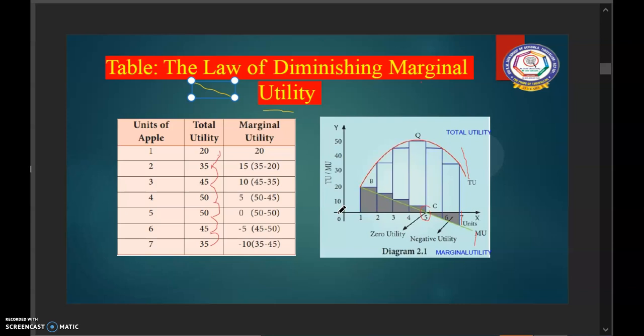So, this means that the more we have of a thing, the less is the satisfaction or utility that we derive from the additional unit of it. Now, this can be explained with a simple example.